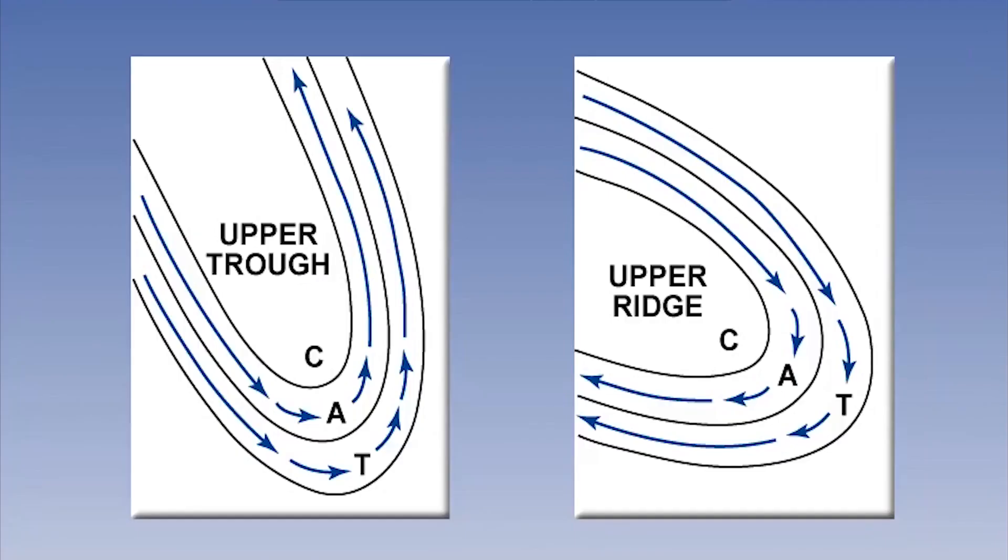We also find significant troughs and ridges in the upper atmosphere. Here, although the winds tend to blow parallel to the isobars, once again, when looking along the trough, we can see substantial changes in direction.